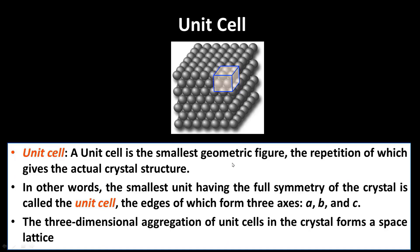A unit cell is defined as the smallest geometric figure, the repetition of which gives the actual crystal structure. The smallest unit having the full symmetry of the crystal is called the unit cell. The unit cell has three axes A, B, and C, with three parameters called a, b, and c. The three-dimensional aggregation of unit cells in the crystal forms a space lattice.